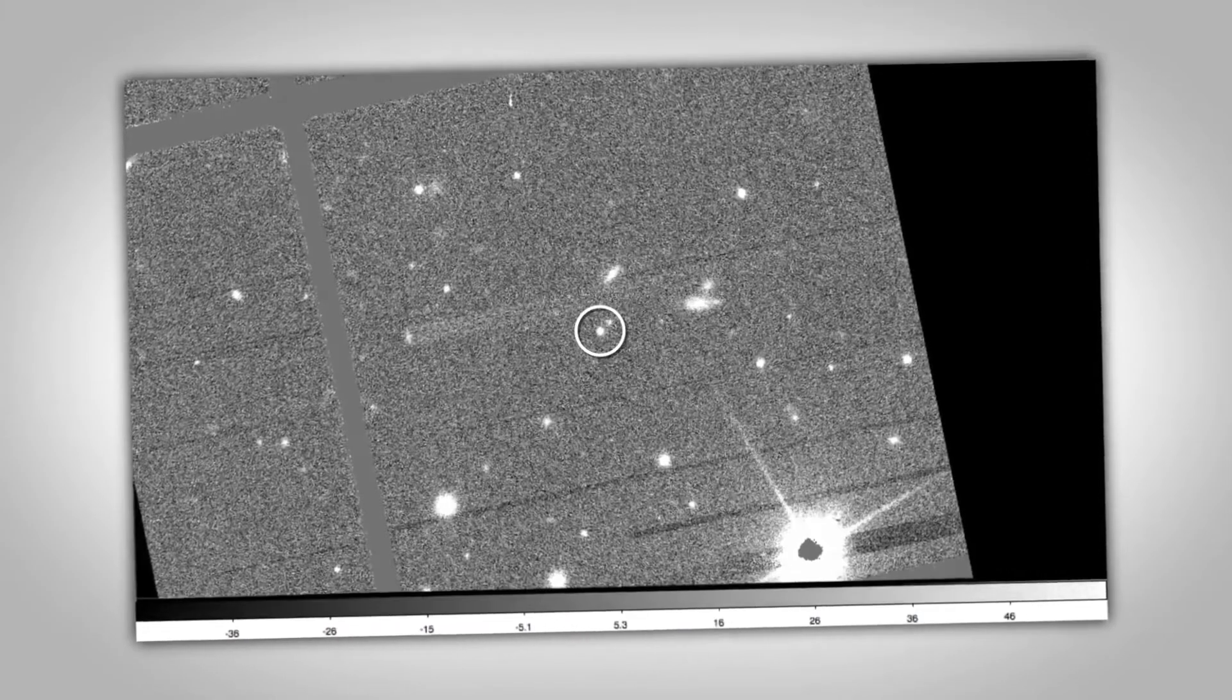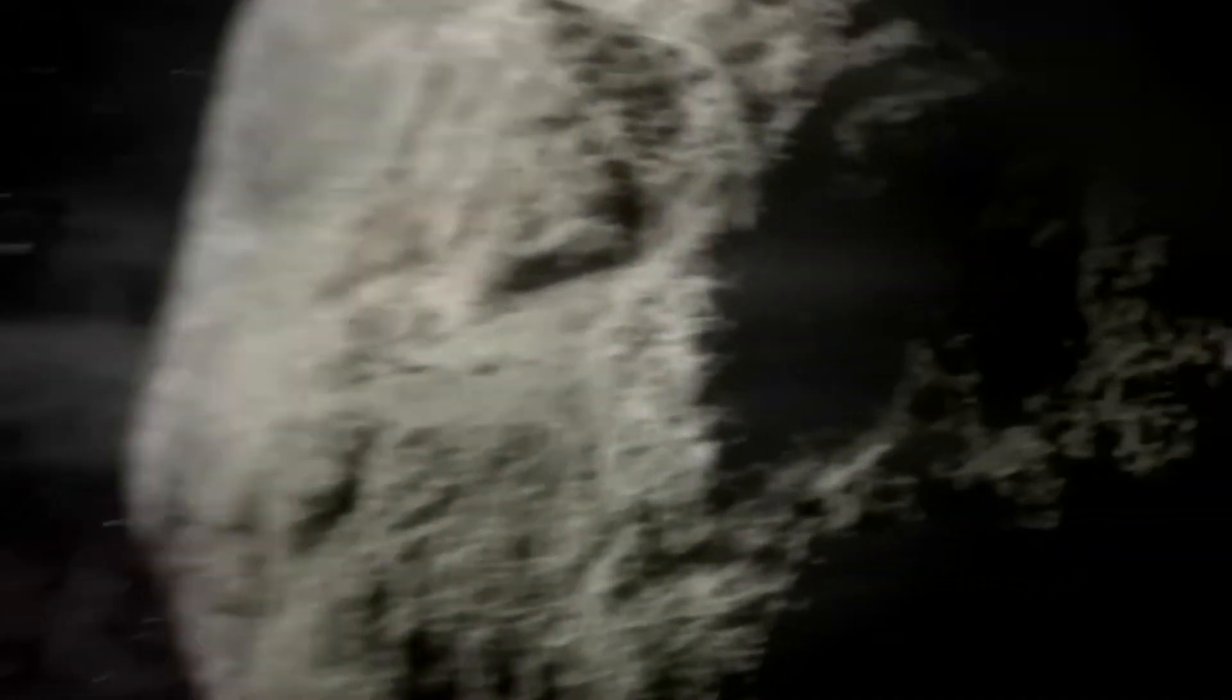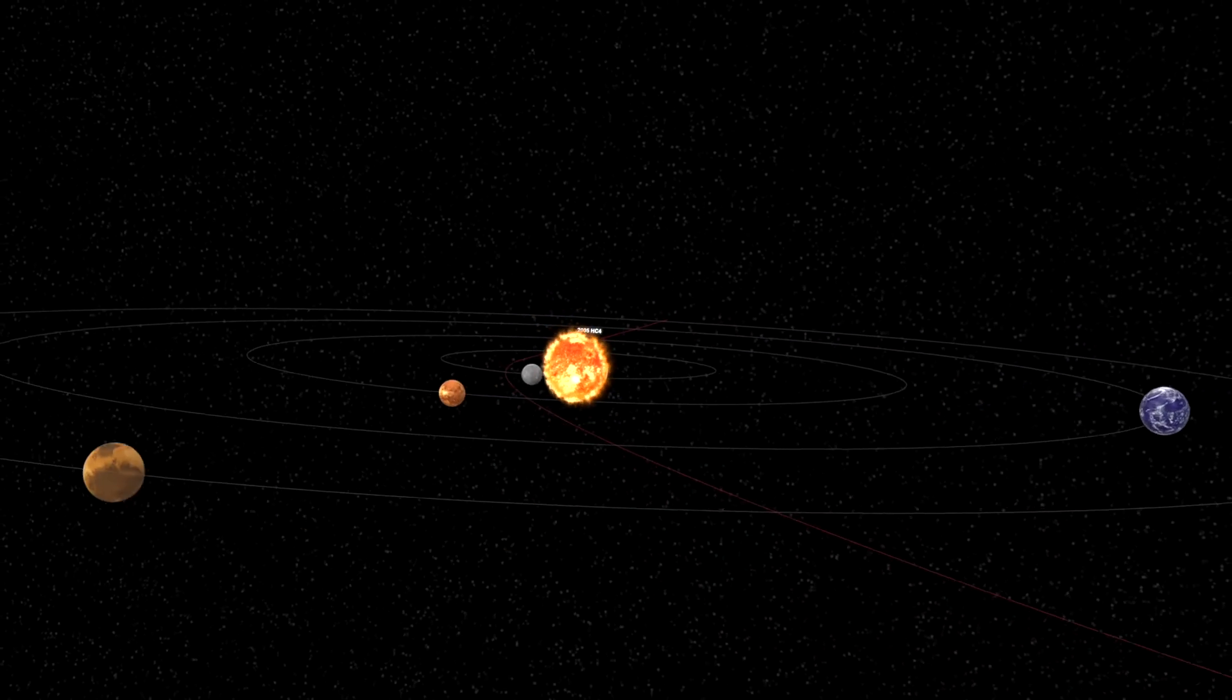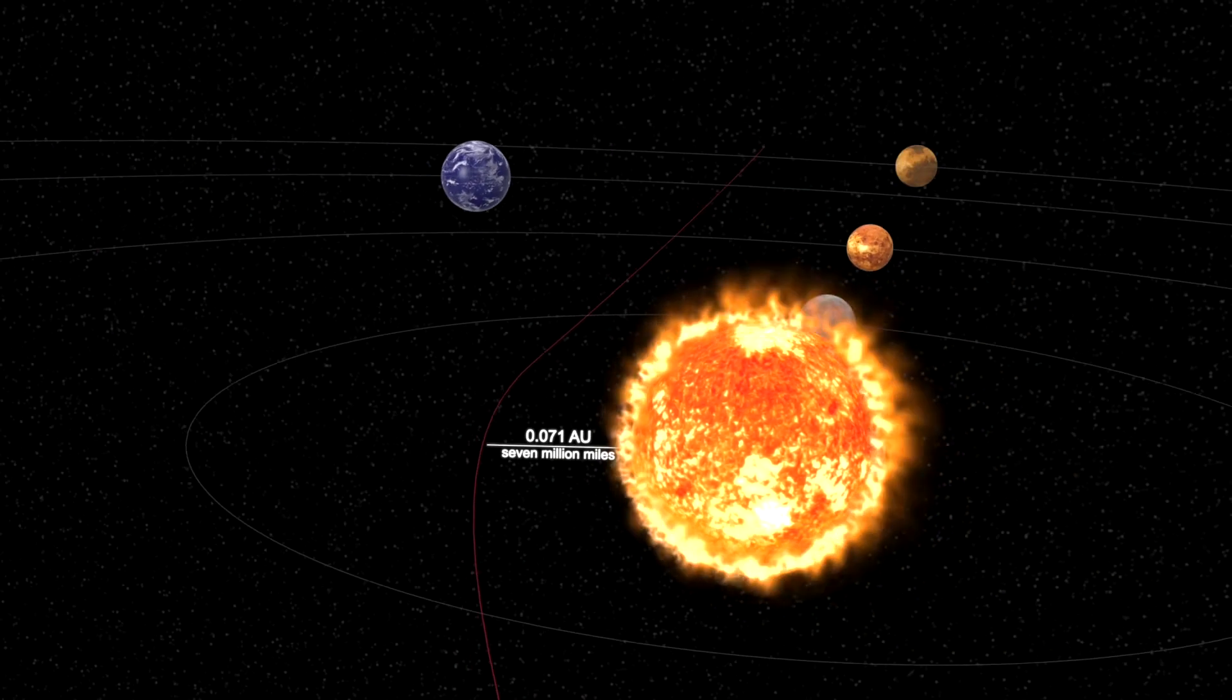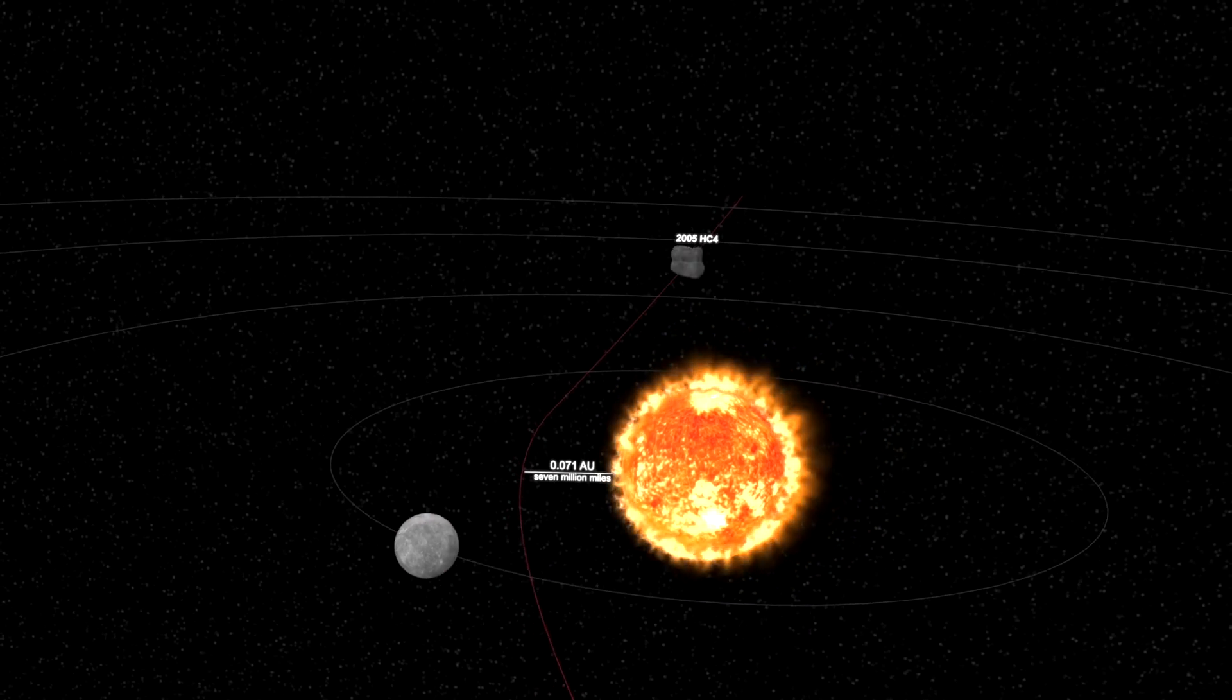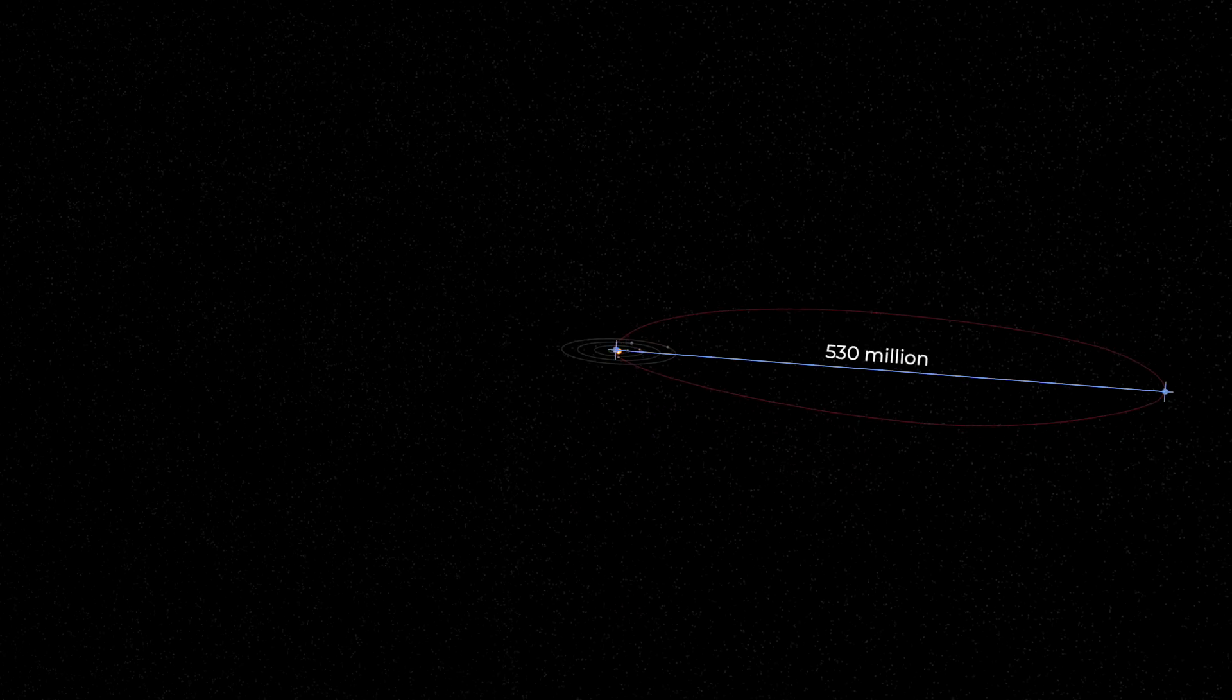But since the discovery of Icarus, more asteroids have been found that get even closer to the sun. One of them, dubbed 2005 HC4, orbits the sun while crossing the orbit of Mercury, Venus, Earth, and Mars during it. This asteroid travels within 0.071 astronomical units from the sun, which is just under 11 million kilometers, 7 million miles, and reaches a distance at the furthest point of over 530 million kilometers.